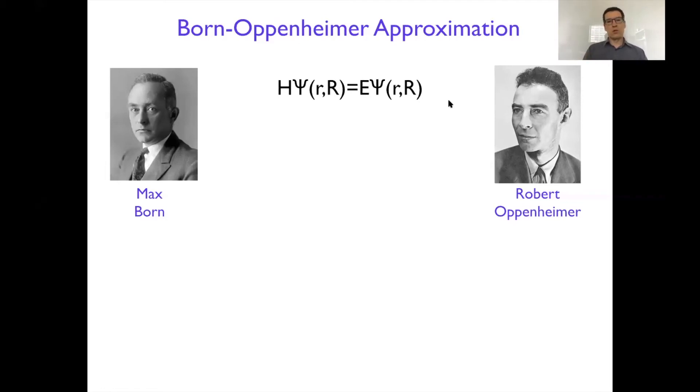But to consider in the differential equation electronic variables first, with maybe freezing the nuclear variables as parameters, and then return for the nuclei and treat them. The classical intuition behind that step is that the electrons are much lighter objects, and therefore the nuclei can physically make sense to consider as a slower subsystem.